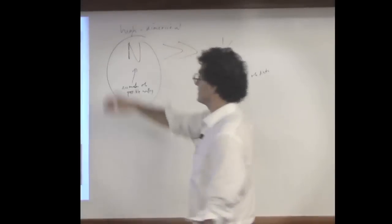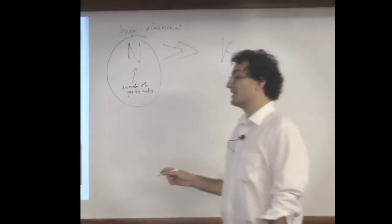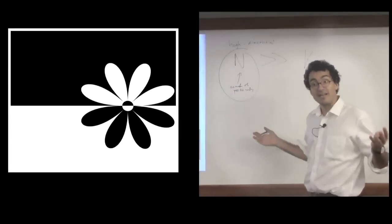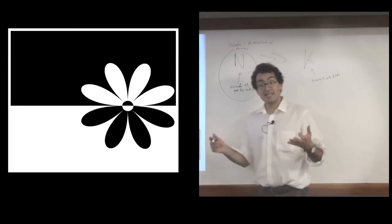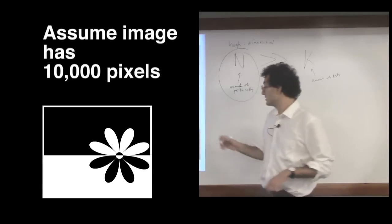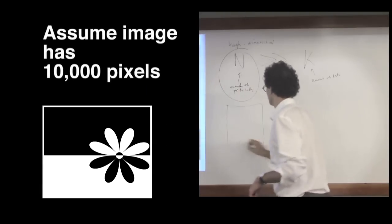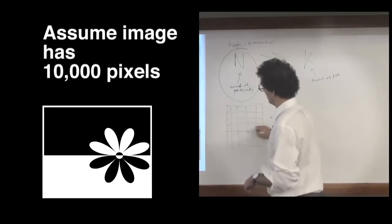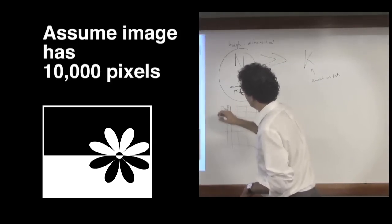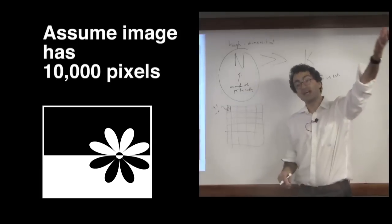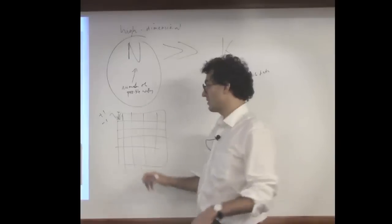So oftentimes we can talk about the dimensions of a data set. So let's, for example, take an image, and let's take a black and white image. And let's say that image has 10,000 pixels. So each pixel in your image can take on the plus one or minus one value. Black, let's say, is plus one, minus one we'll say is white.